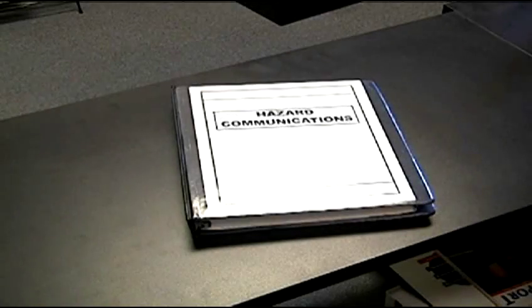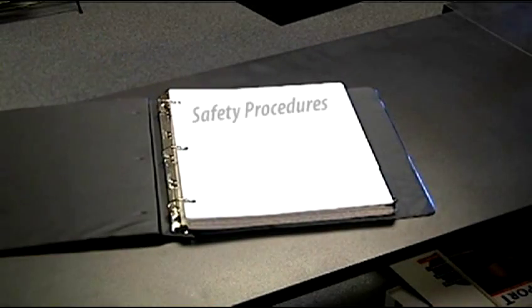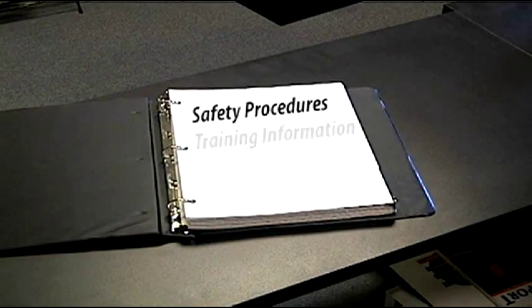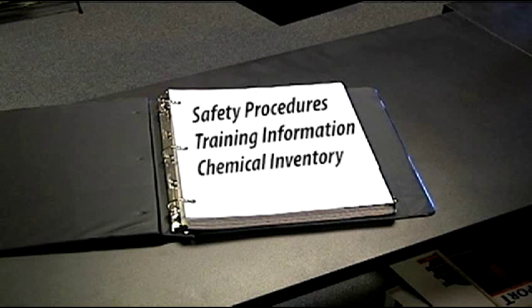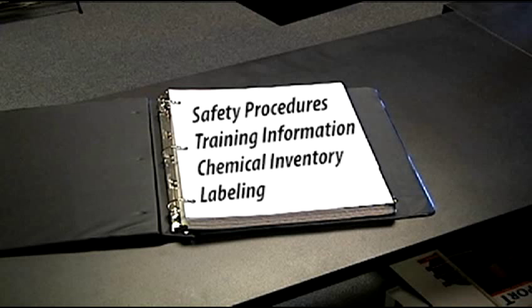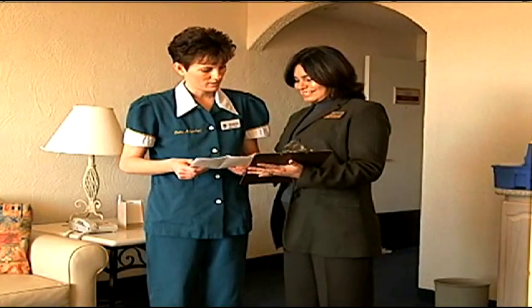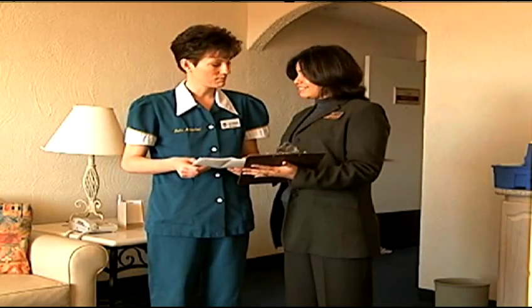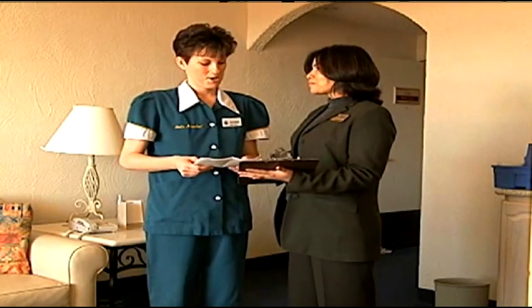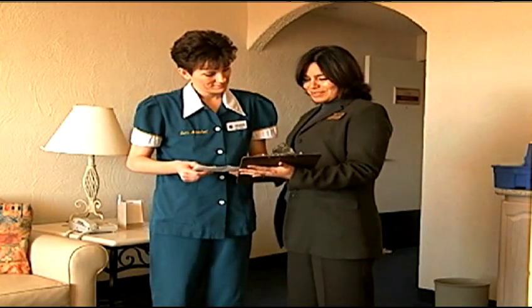Your property has a written hazard communications HASCOM plan outlining safety steps and procedures, training information, chemical inventory, labeling procedures, and other information your company considers important when using, handling, storing, and disposing of chemicals. The written plan is your guide to safety and health, as well as making sure all the regulatory standards of hazard communications are achieved.